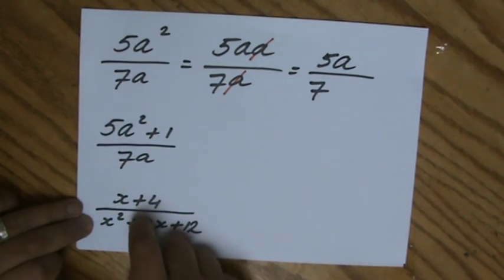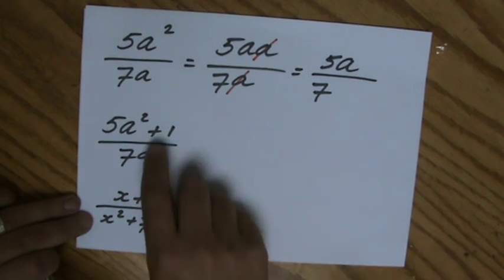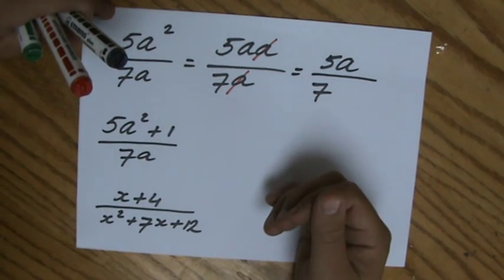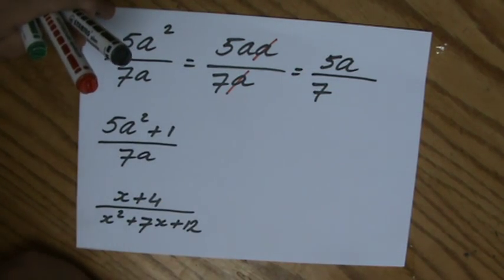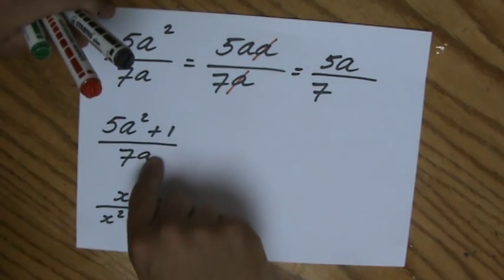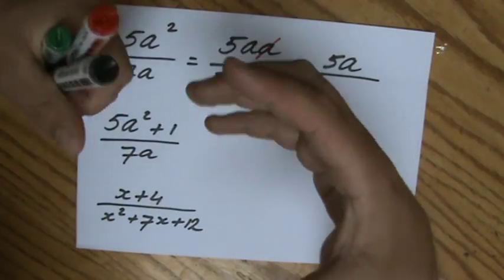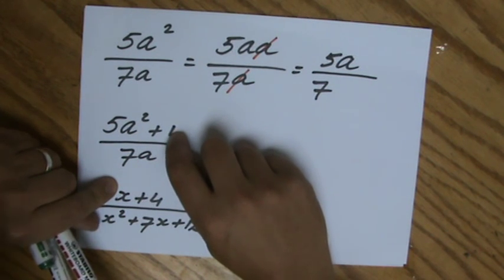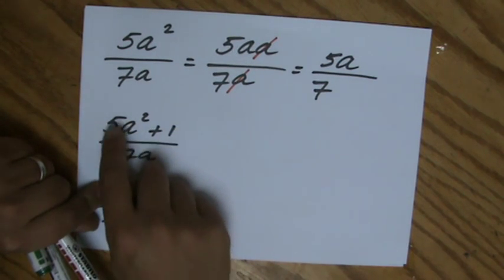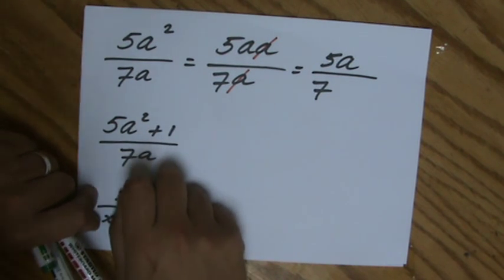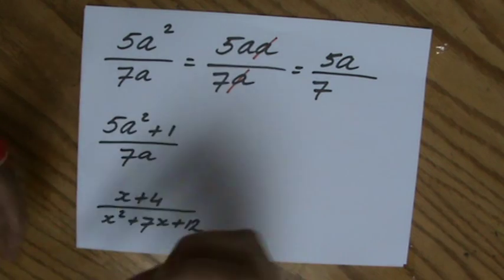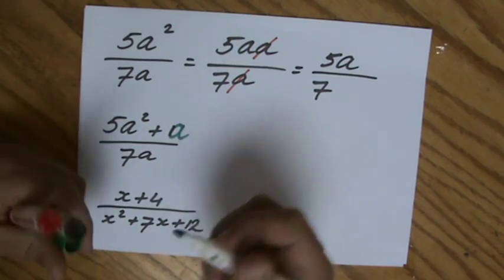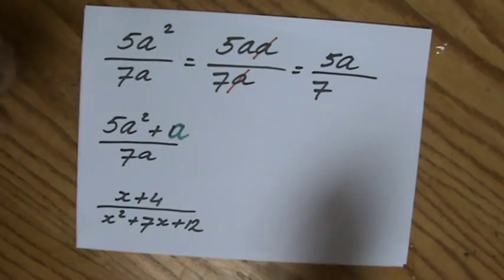Now the second question looks almost the same, but it's not because there's a plus 1 in the numerator. Is there a highest common factor? Can I simplify this further? Some of you will say there's an a there and an a there. But hang on, that common factor needs to be in all the terms. So the 1 should also have an a if you want to get rid of an a. Is there a common factor in all three terms? No, there's not.